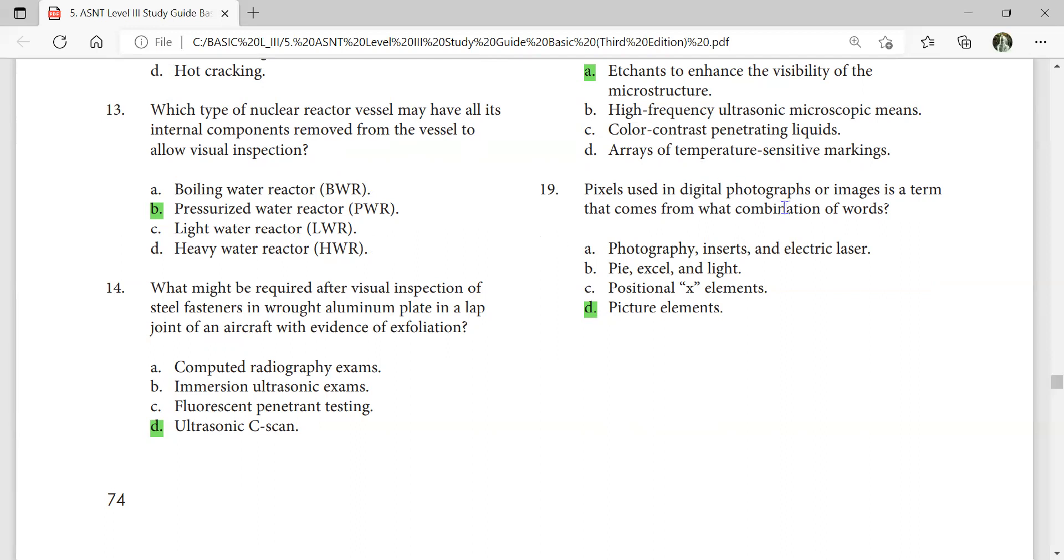Pixel used in digital photography or images is a term that comes from what combination of words? Picture elements.